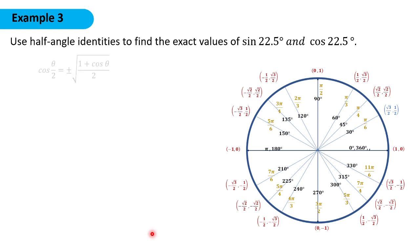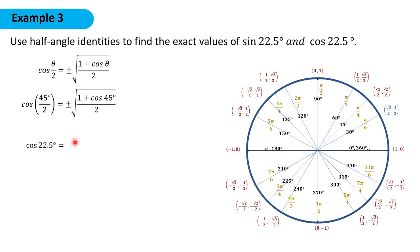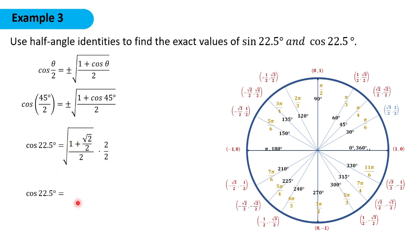To get cosine 22.5°, we use the half-angle formula with θ equal to 45 degrees. So cosine 22.5° equals the positive square root of (1 plus cosine 45°) over 2, where cosine 45° is √2/2. Multiplying by 2/2, we get (2 plus √2) over 4. Simplifying, cosine 22.5° equals the square root of (2 plus √2) over 2.